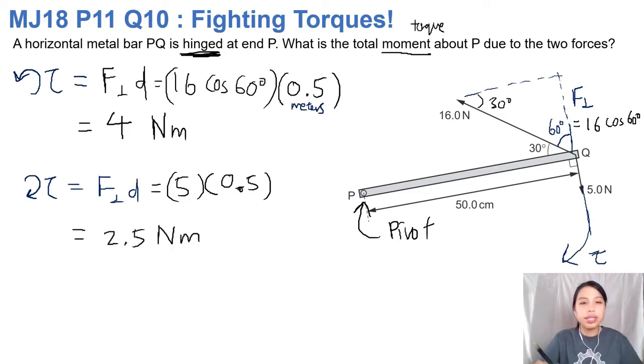Here comes the last part. These torques are fighting, like arm wrestling almost. One says let's go anti-clockwise by four, the other one says no, no, no, let's go clockwise by 2.5. Who's going to win in the end? The bigger one, of course.